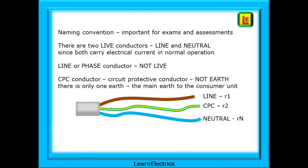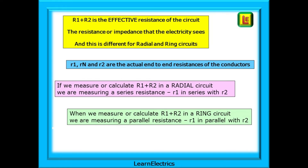Why little and not big? Big R1 plus R2 is the effective resistance of the circuit and may not be the actual resistance of the conductors. It is the resistance or impedance that the electricity sees, and this is different for radial and ring circuits. How they are connected makes a big difference to the effective resistance. But little r1, little r2, etc. are the actual end-to-end resistances of each conductor and they are unchanging.